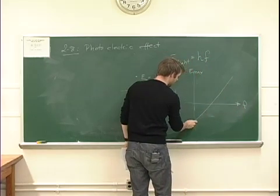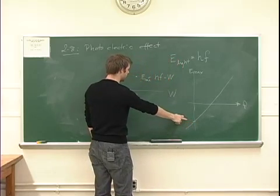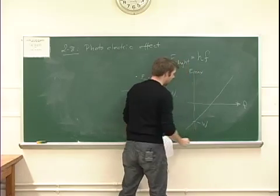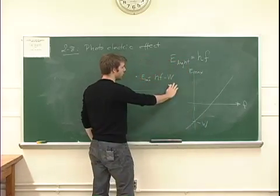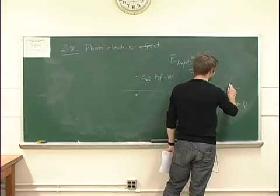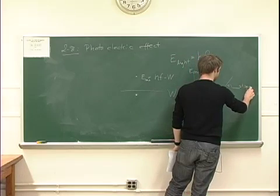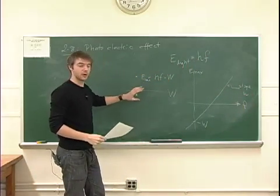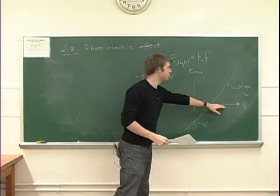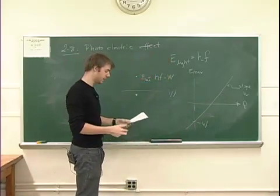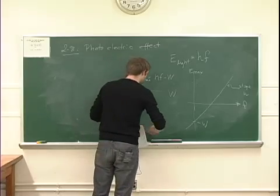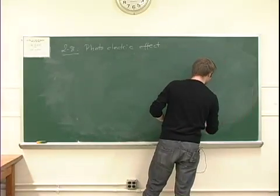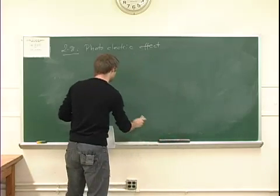The graph would have a negative intercept on the energy axis, which is minus W, and it would have a slope equal to Planck's constant h. This is exactly the experiment we're going to do today — we're going to measure the energy as a function of frequency and determine the slope and the intercept. The way we're going to do that is by putting this metal that participates in the photoelectric effect inside a circuit.